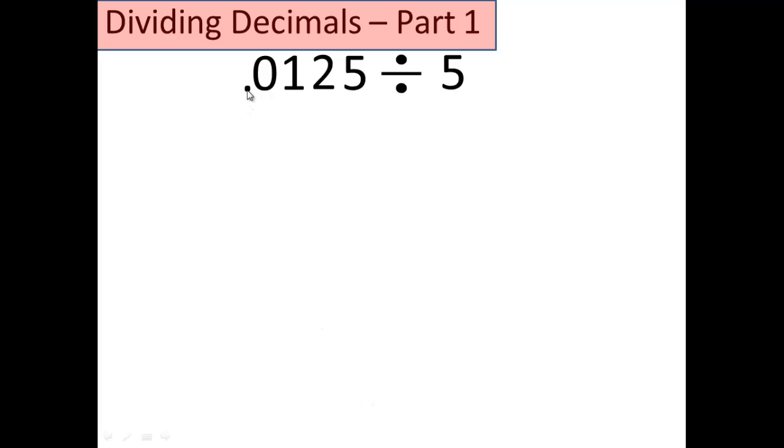Ah, look. 0.125 or 125 thousandths divided by 5. Crisscross. Next step. Go ahead. Call out what you think the next step is. Did you say pop it like it's hot? Because you'd be right.